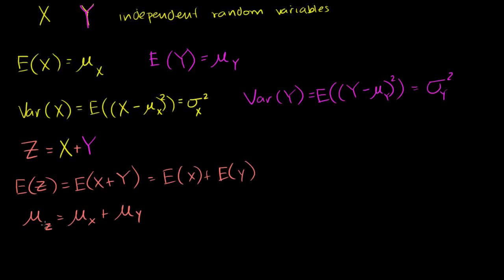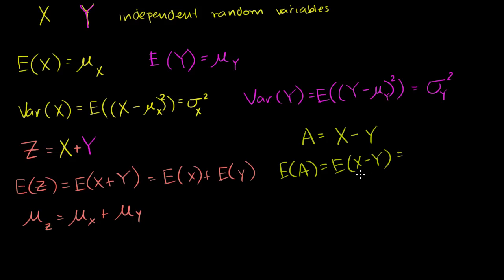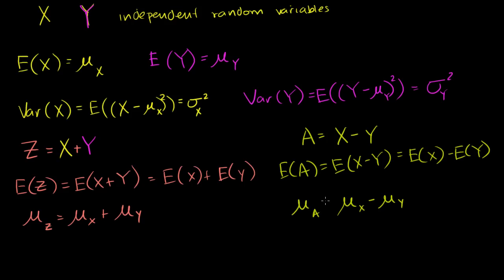Similarly, if I have another random variable a defined as x minus y, the expected value of a equals the expected value of x minus y, which equals the expected value of x minus the expected value of y — the same thing as the mean of x minus the mean of y. This is review that I'll use when we start talking about distributions that are sums and differences of other distributions.